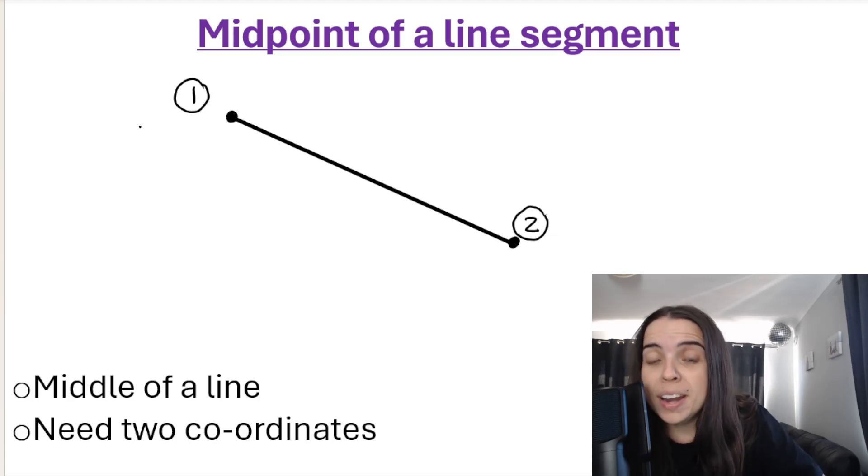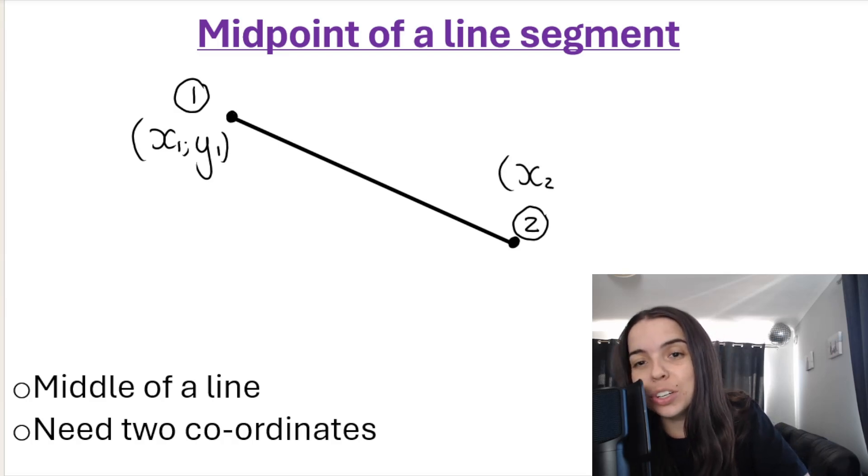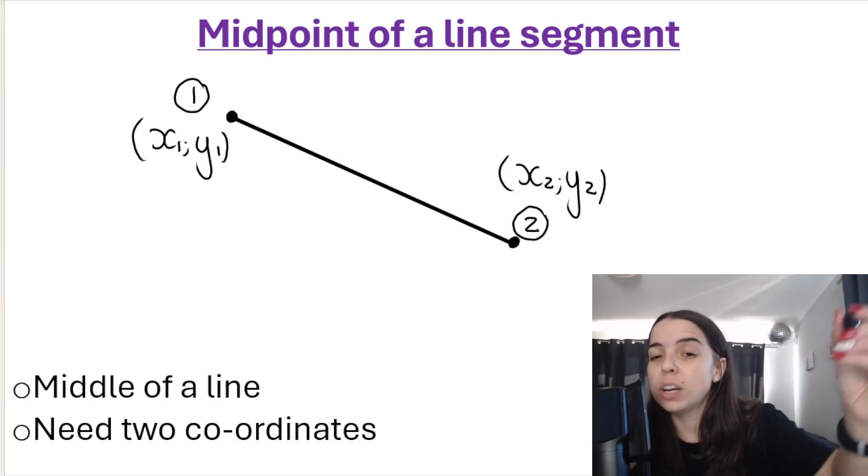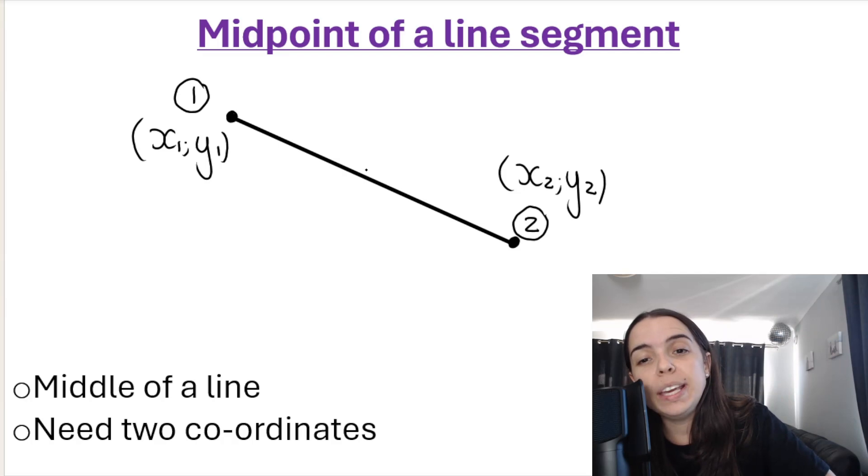Or we can call it coordinate number 1, then this will be x1 and y1, and coordinate 2, this will be x2 and y2. Now in the middle of that line segment, exactly halfway between coordinate 1 and coordinate number 2, we get what we call the midpoint. Let's call that M. The midpoint over here is also a coordinate, and it would be x, y.